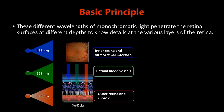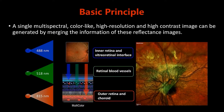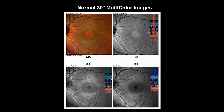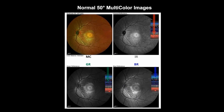The blue reflectance particularly enables details of the inner retina and vitreoretinal interface. The green reflectance images specifically allow deeper details such as retinal blood vessels and intra-retinal lipid exudation to be seen. Infrared reflectance predominantly visualizes structures at the level of the outer retina and choroid. This is a normal 30-degree multicolor image, and this is a normal 50-degree multicolor image.